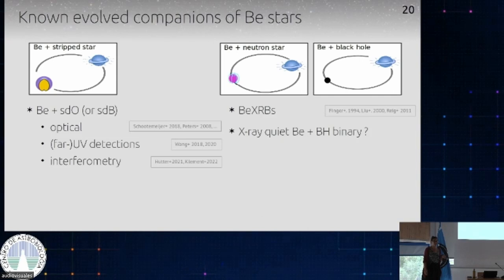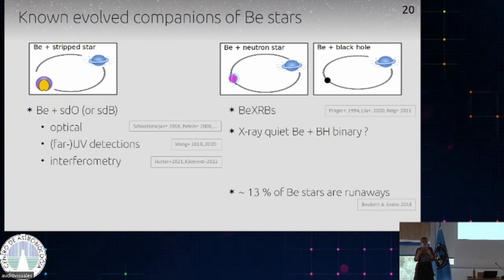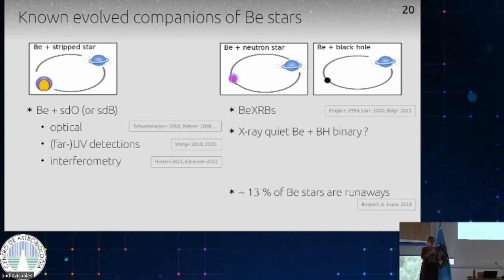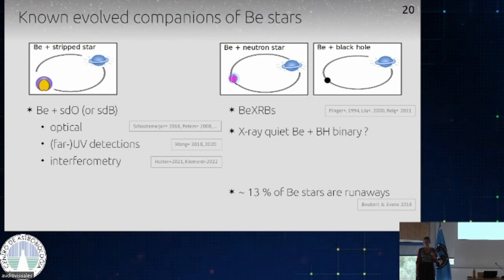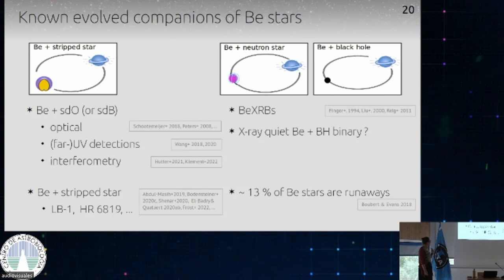Some of these systems, depending on whether there was a supernova, should be disrupted, and there was a study that targeted exactly that — checking how many BE stars are runaways and if their properties match what you'd expect from binary interactions and supernova physics. That study found this agrees with the binary channel, and that there is a large fraction of BE stars that are runaways. Now I want to come to the systems that were recently found, which are probably also BE plus stripped star systems.